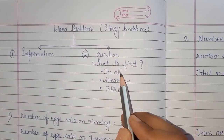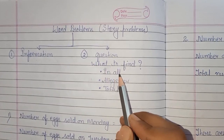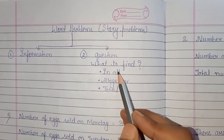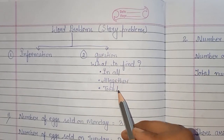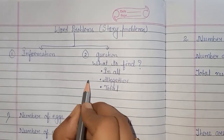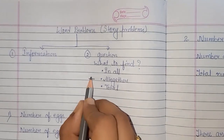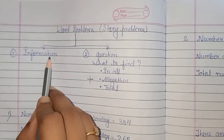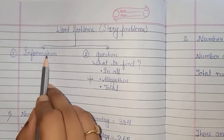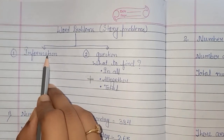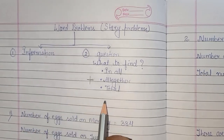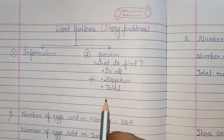In the question, if the terms 'in all,' 'altogether,' or 'total' are given, it means we have to add the given information. Whatever information we are getting from the question, we will add it and then we will get the answer.